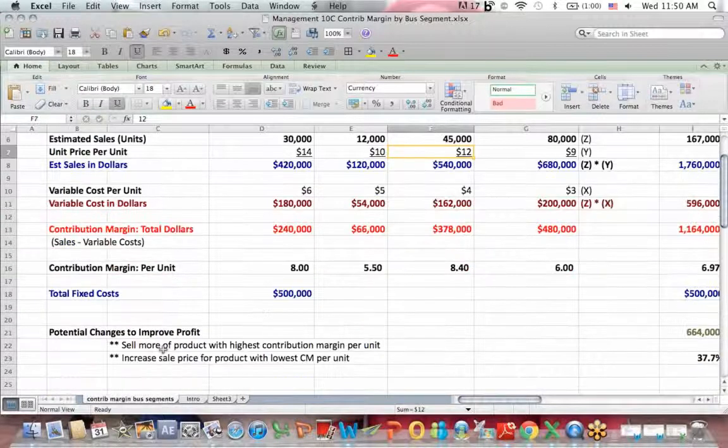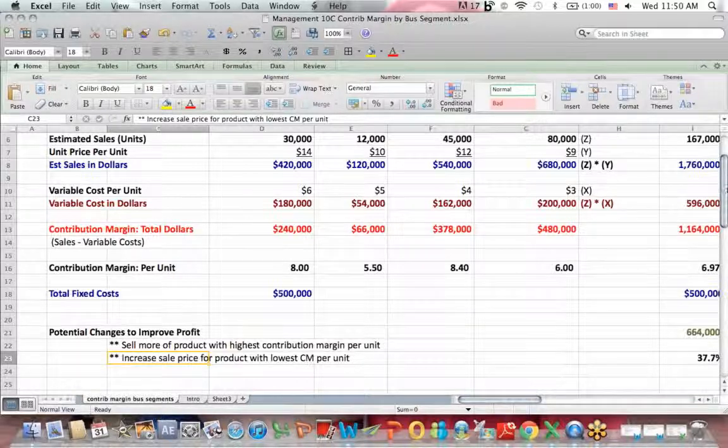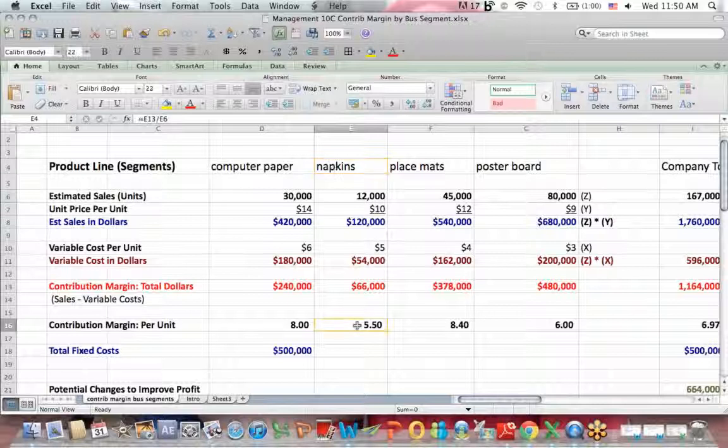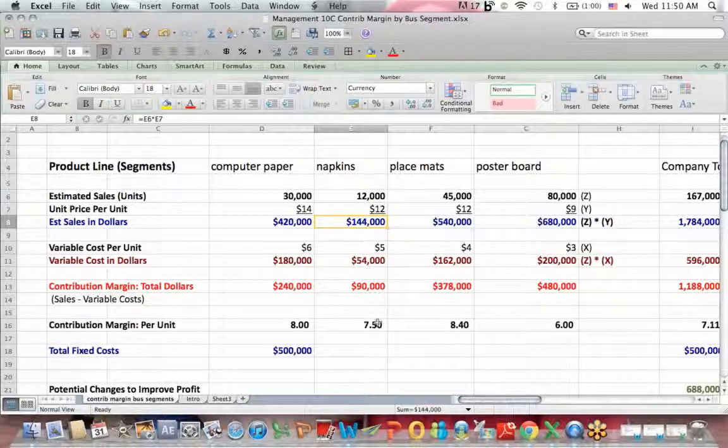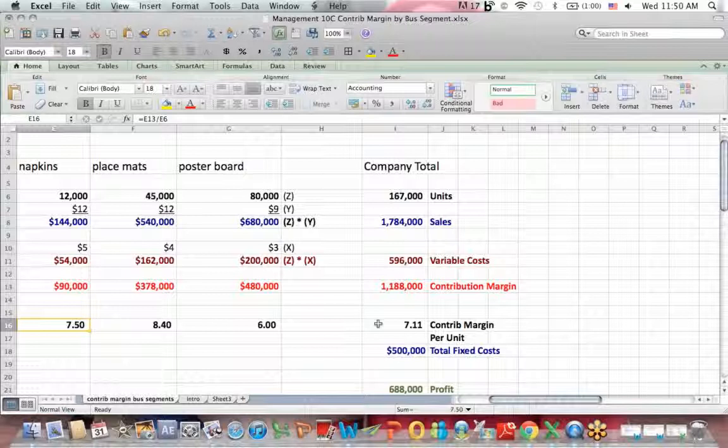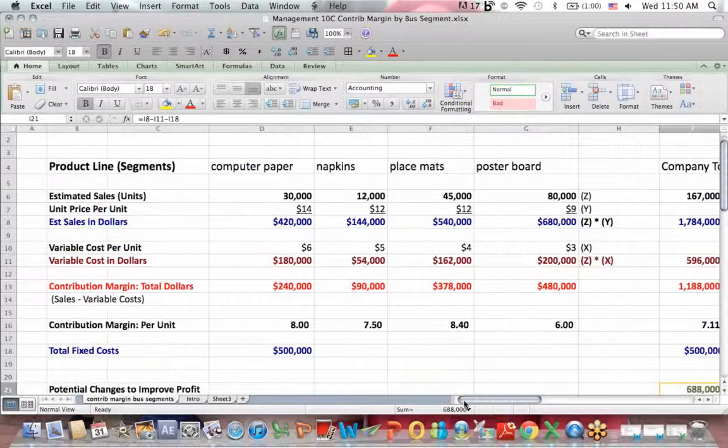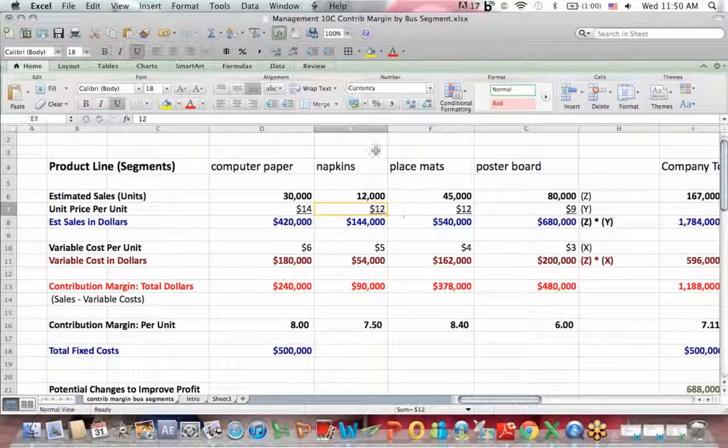Another way to become more profitable would be increase the sale price for a product with a low contribution margin per unit. In this example, the napkins has a low contribution margin per unit. Why don't I increase the unit price from $10 a unit to 12? Contribution margin goes up per unit. Contribution margin for the overall company goes up, and my profit goes up a little bit. So what we see is, I'm going to change that back.